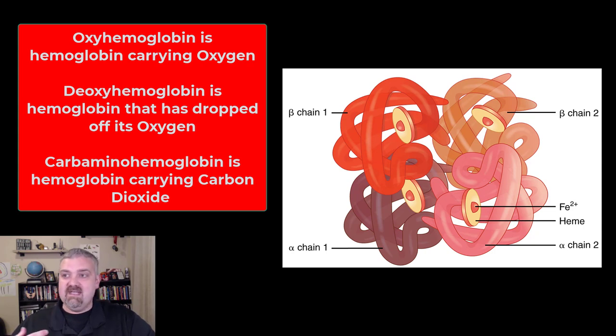Once this hemoglobin gives up its oxygen to your body tissues, it becomes darker red and is now called deoxyhemoglobin.